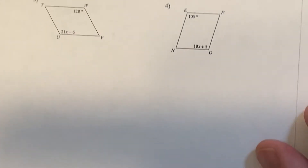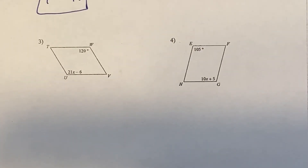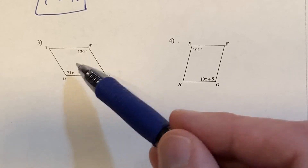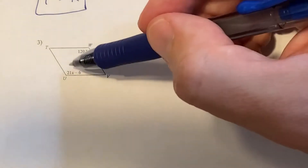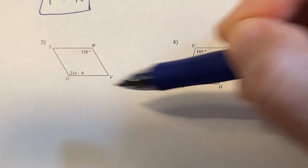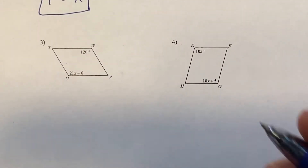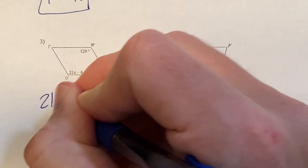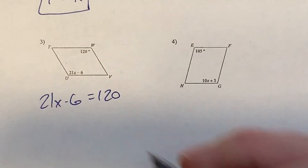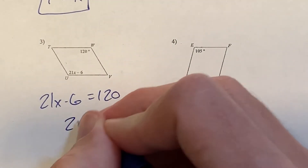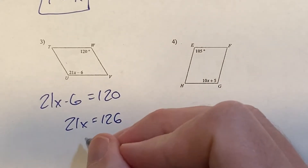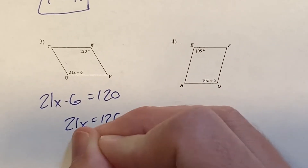Number 3: when I have a parallelogram, I ask myself — are these opposite angles or adjacent angles? Opposite angles are congruent; adjacent angles add to 180 degrees. These are across from each other, so they're opposite and equal. So: 21x minus 6 equals 120, add 6 to get 21x equals 126, divide by 21, and x equals 6.